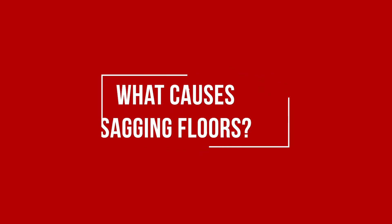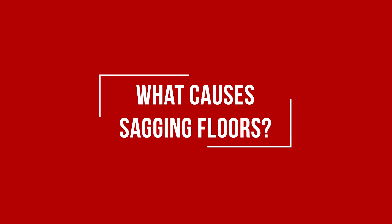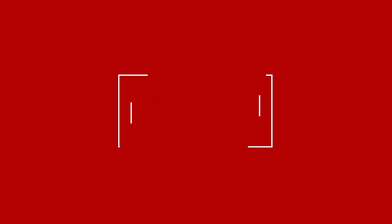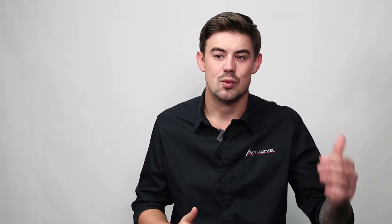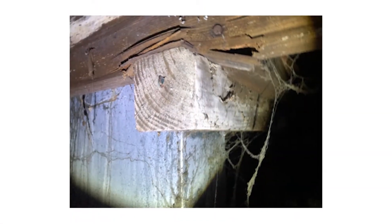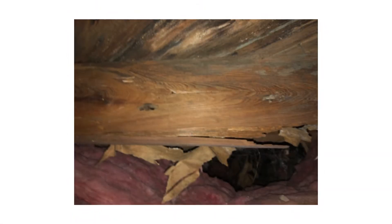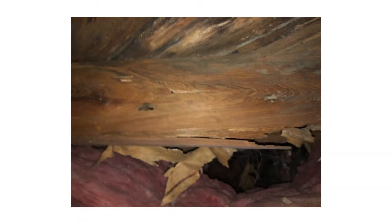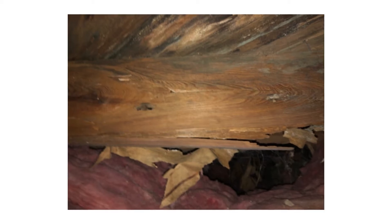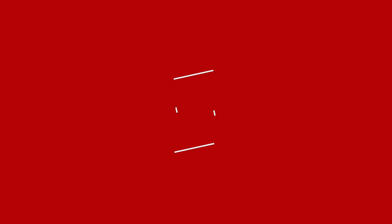Generally, sagging floors are caused by beams in your crawl space weakening due to moisture. The moisture can even cause wood rot in your crawl space. Because of the weakness, the beams begin to bow, which causes the floor to sag.